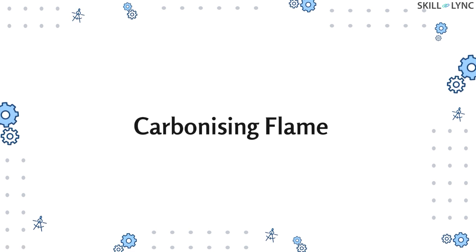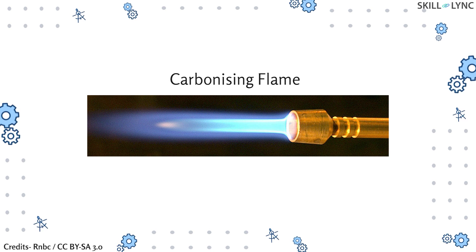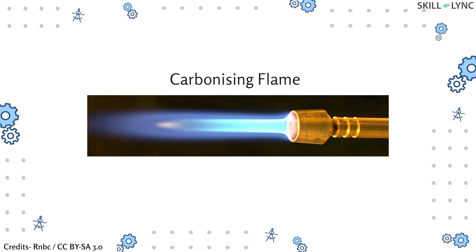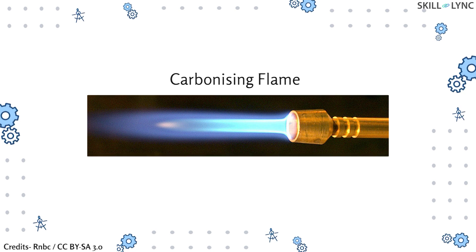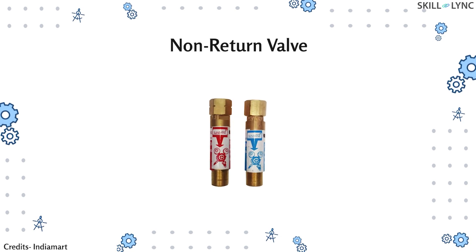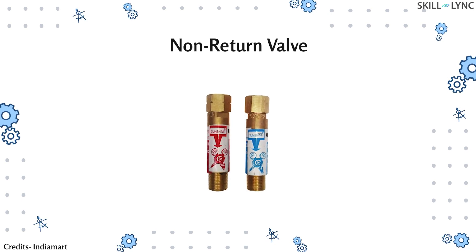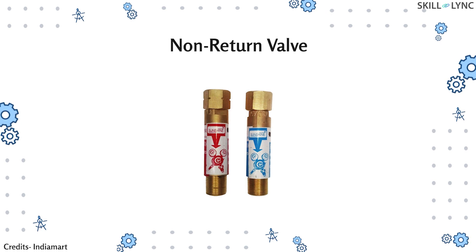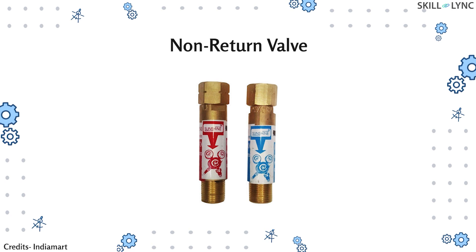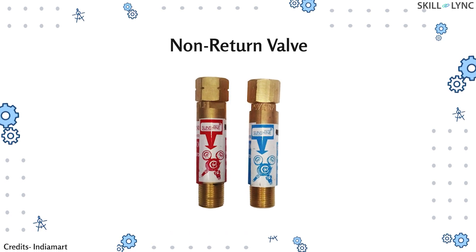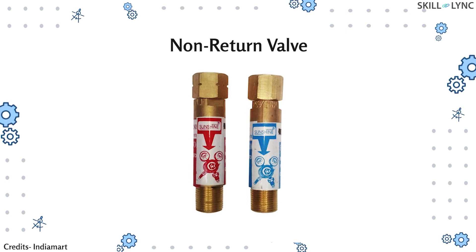The third type of flame is called the carbonizing flame. This flame has less oxygen and more fuel, giving it a much lower temperature than the other two types, because the unburnt fuel reduces the temperature. The carbonizing flame tends to remove oxides from the metal while welding, which is why it is also called a reducing flame. Another important component is the non-return valve. Some fuels used with oxygen are not only flammable but also explosive. When the fuel-oxygen mixture is ignited, the flame can potentially travel back into the cylinders through the hose and explode, so a non-return check valve is provided to prevent this.